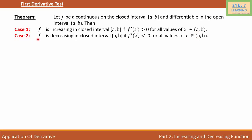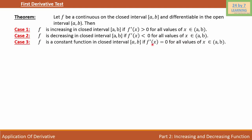Case 2: f is decreasing in the closed interval [a,b] if f'(x) is less than 0 for all values of x belonging to (a,b). Case 3: f is a constant function in the closed interval [a,b] if f'(x) is equal to 0 for all values of x belonging to (a,b).